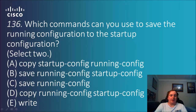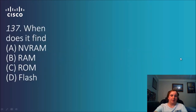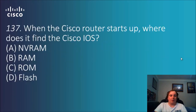Question 136: Which commands can be used to save the running configuration to the startup configuration? Select two. Options include: copy restart config running config, save running config startup config, save running config, copy running config to startup config. The answers are 'write' and 'copy running-config startup-config.' You write out exactly what you're doing — copying the running config so that it becomes the startup config.